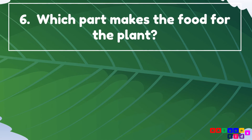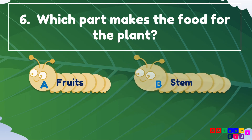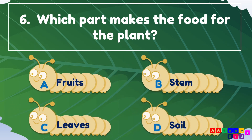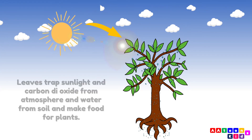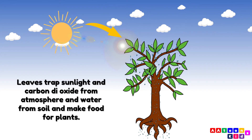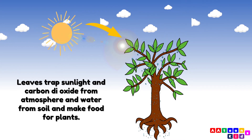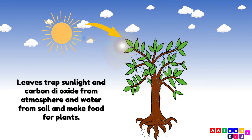Which part makes the food for the plant? Fruits, stem, leaves, or soil? The answer is leaves. Leaves trap sunlight and carbon dioxide from the atmosphere and water from soil to make food for plants.